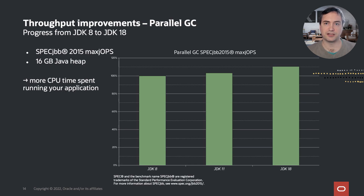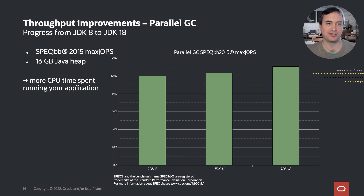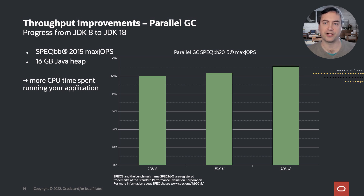Before discussing latency improvements, let's see whether there were changes to other collectors as well. Of course, there were. Here's the same throughput improvement graph for ParallelGC I showed earlier. As you can see, while the improvements are not that pronounced in JDK 18, you can expect around 10% improvement just by dropping in the new JVM.